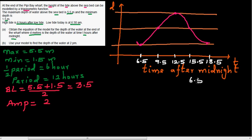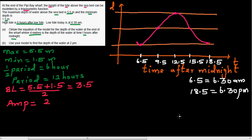Note that 6.5 means 6:30 am, and this is where you can make major mistakes: 18.5 is 12 hours after that, which is 6:30 pm. Now, starting from t = 6.5 at the minimum, this is a negative cosine graph.